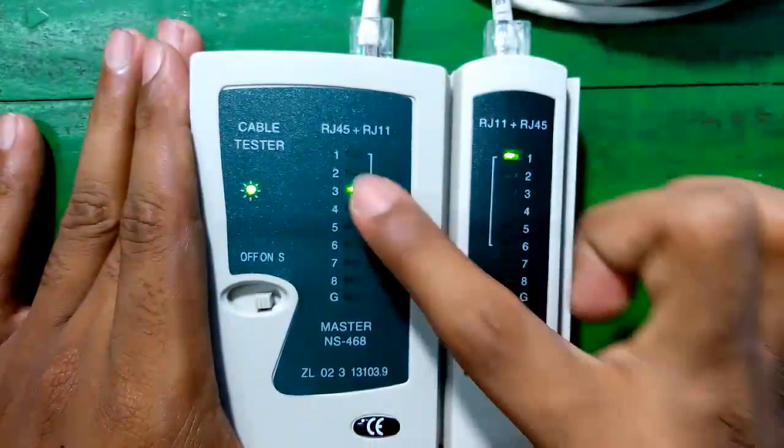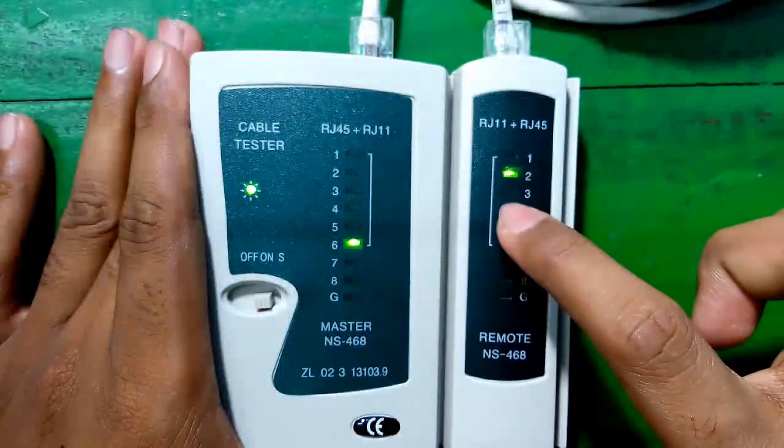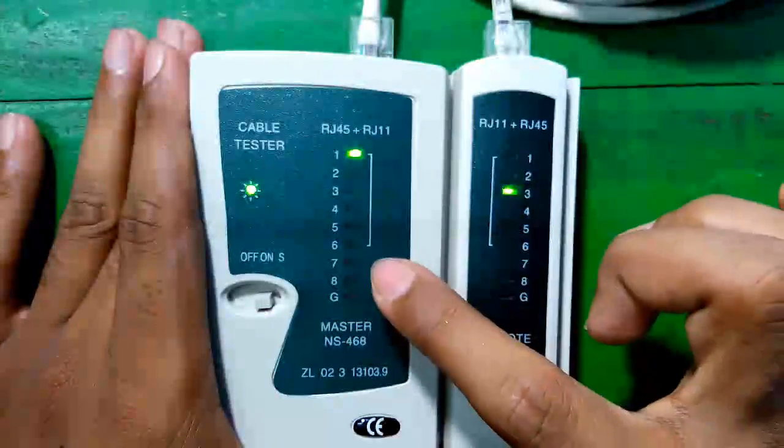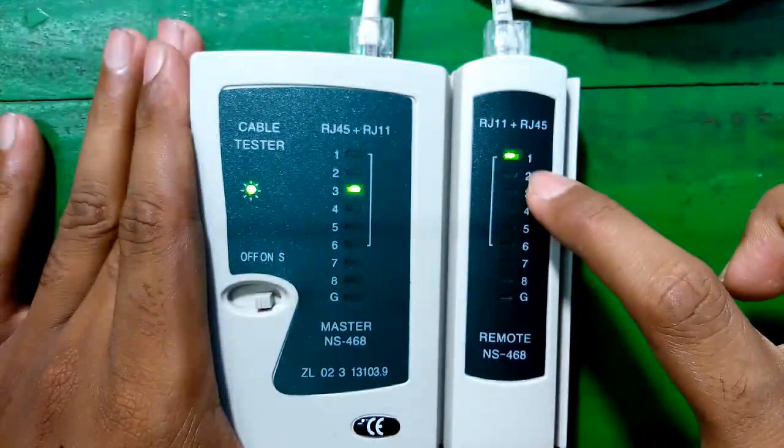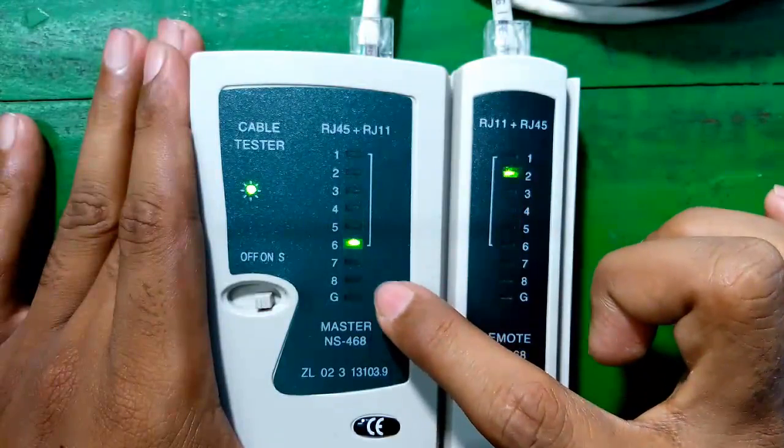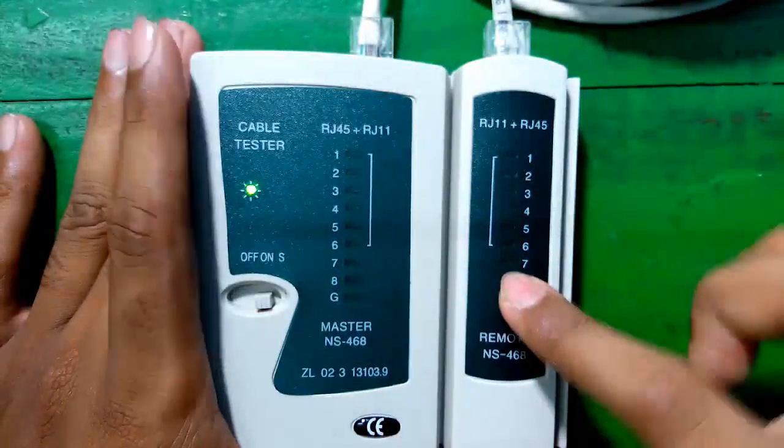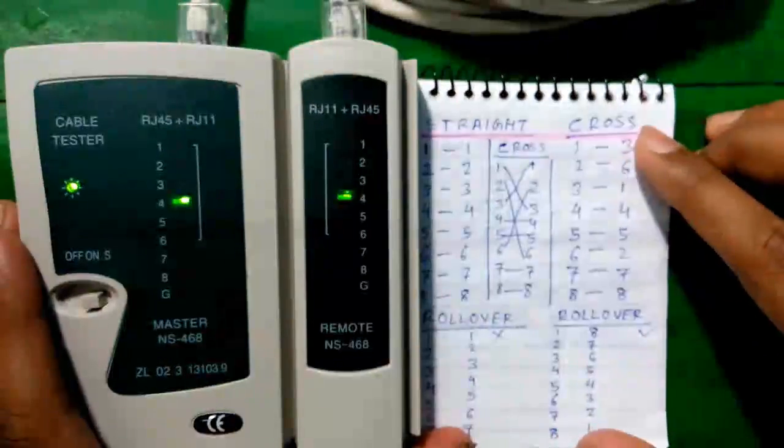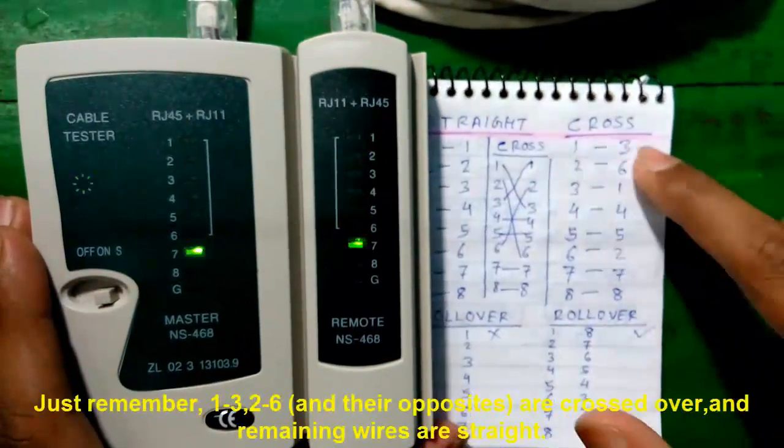This is one to three, two to six, three to one, four to four, five to five, six to two, and seven to seven and eight to eight. That is, this is the cabling layout for crossover cable.